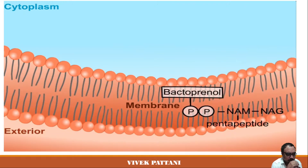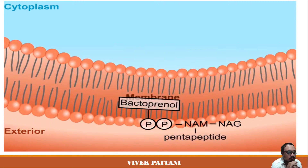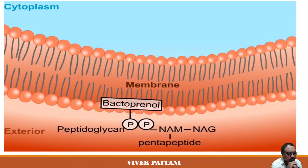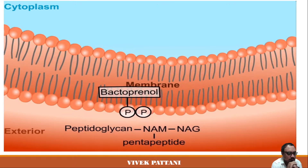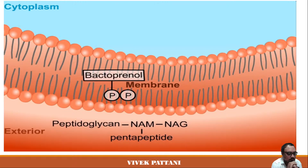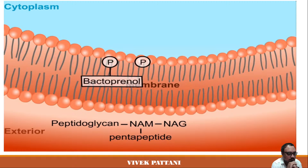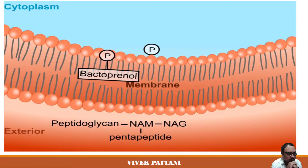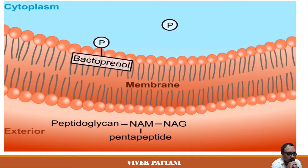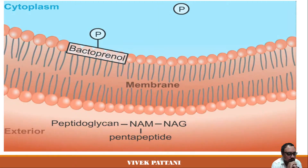The completed NAM-NAG precursor is transported across the membrane to its outer surface by the bactoprenol carrier lipid. The disaccharide pentapeptide is then transferred to the growing end of the peptidoglycan chain to lengthen it by one repeat unit. As bactoprenol pyrophosphate returns inside the cell membrane, one phosphate is removed by a pyrophosphatase, leaving bactoprenol phosphate to accept another NAM pentapeptide.